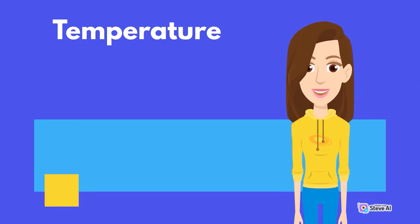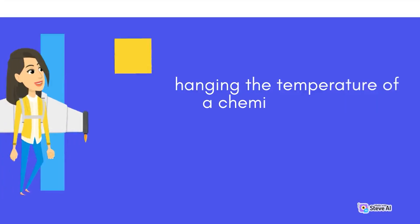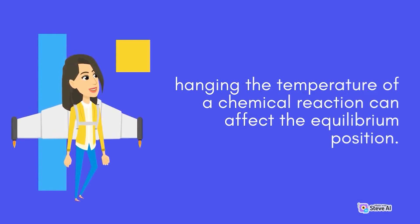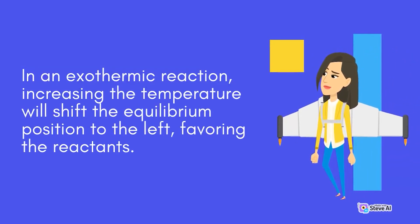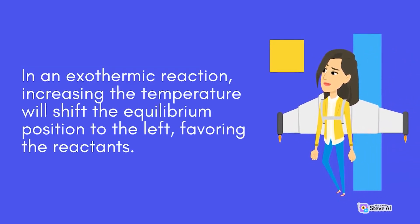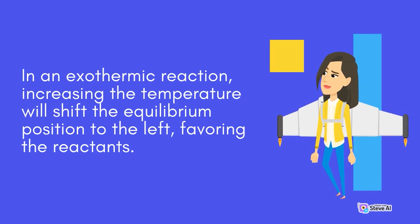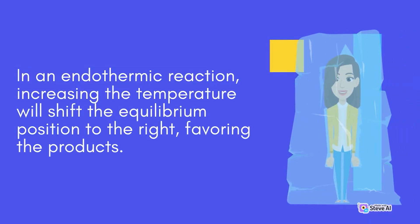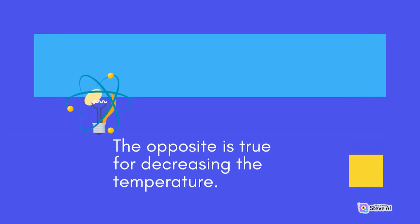Changing the temperature of a chemical reaction can affect the equilibrium position. In an exothermic reaction, increasing the temperature will shift the equilibrium position to the left, favoring the reactants. In an endothermic reaction, increasing the temperature will shift the equilibrium position to the right, favoring the products. The opposite is true for decreasing the temperature.